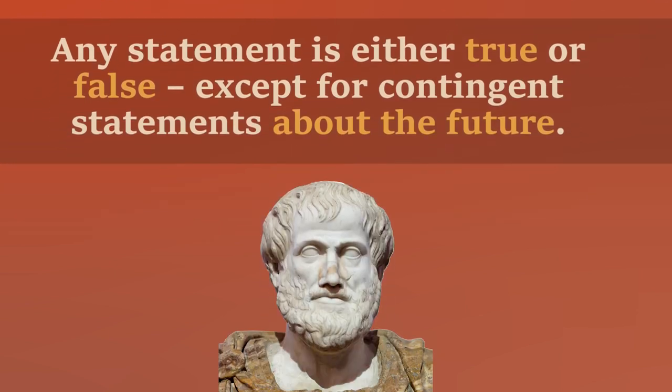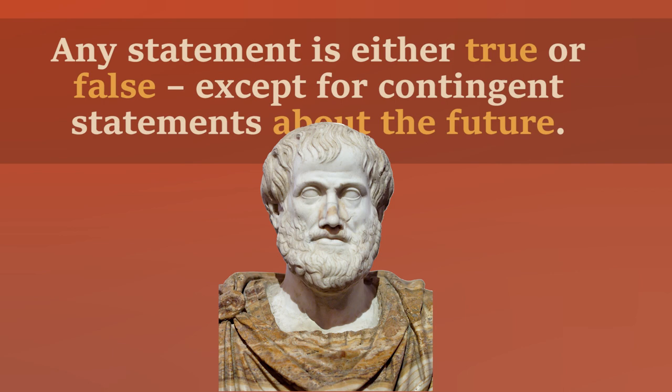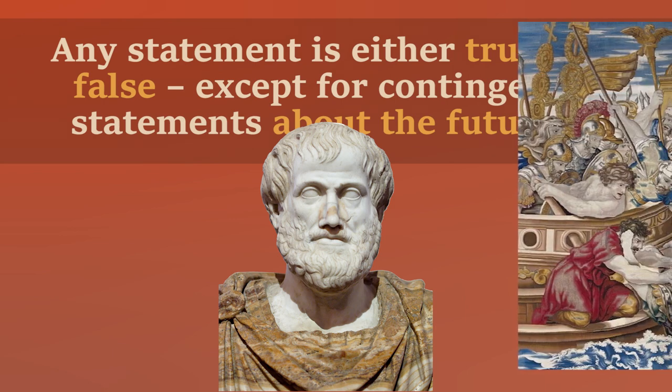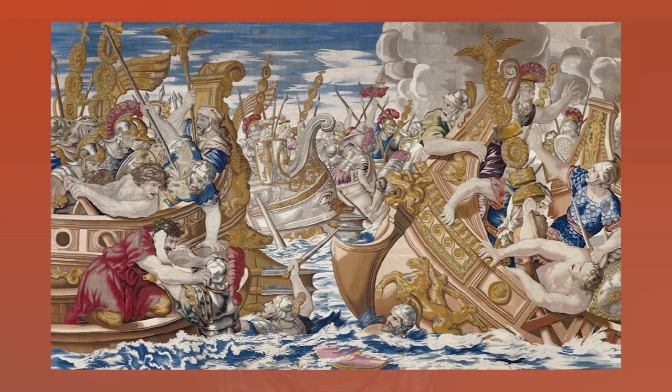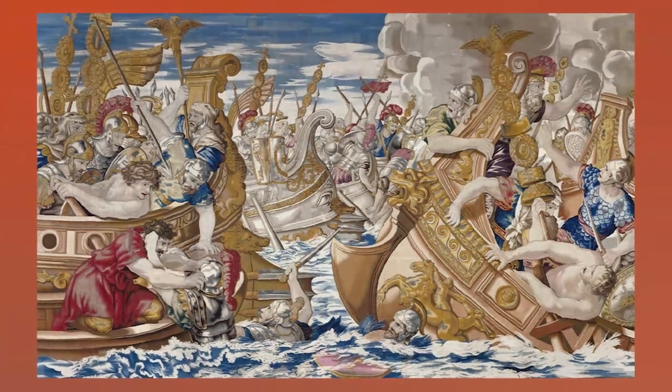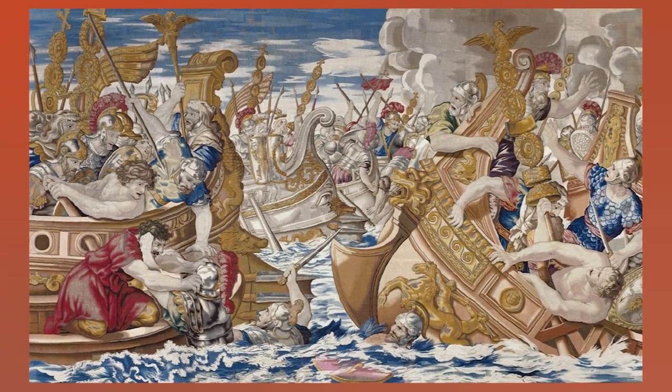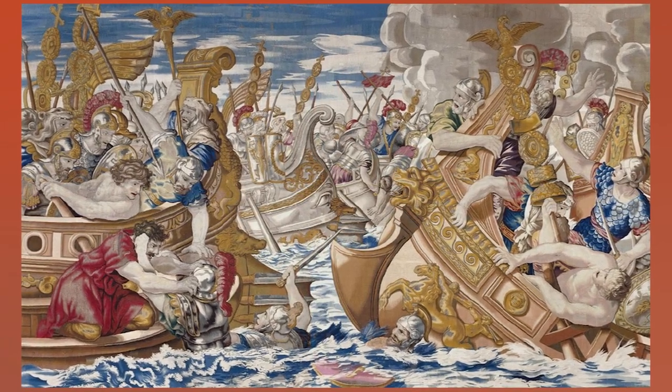What does contingent even mean, and why would he add this exception to his law? Well, he tells us to imagine a sea fight taking place. If we observe it happening, we can say the statement 'a sea fight is taking place' is true. But if it's true, then it was also true yesterday and the day before. According to this logic, it was always true that the sea fight will take place, so it would seem that this event was already determined to happen — it's like fate would determine it.